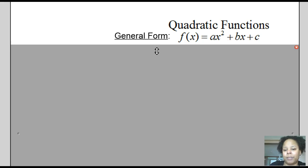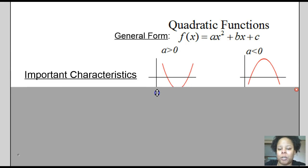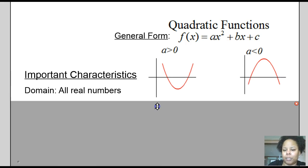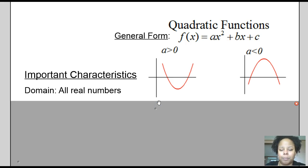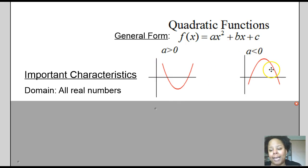The only restriction is that a cannot be zero. b and c can be zero, but a cannot be zero. When a is less than zero and a is greater than zero, we're going to have different shapes of the parabola. When a is greater than zero, the graph will open up, and when a is less than zero, the parabola will open down.